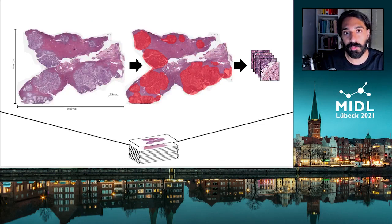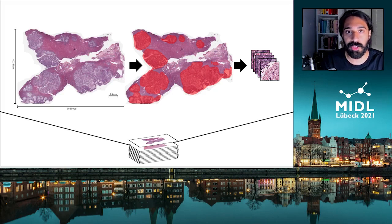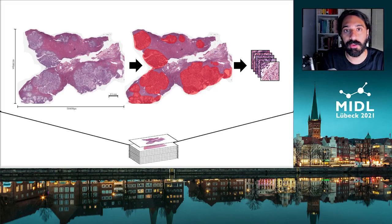Because the dataset is so small, we want to do the best we can to reduce noise. For this reason, a pathologist manually annotated regions of tumor. In the experiments I'm going to talk about, we only extract tissue from these regions.